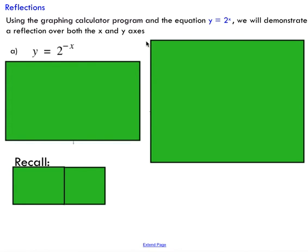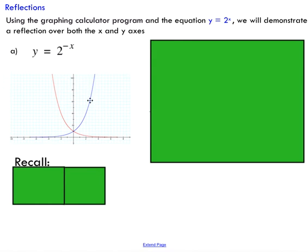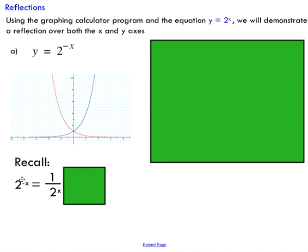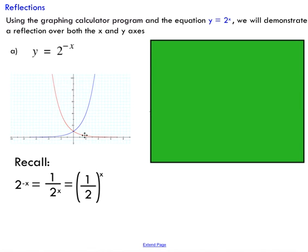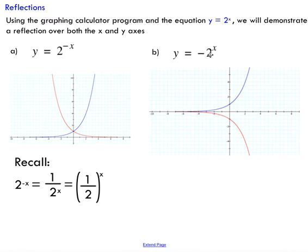For reflections — if we put a negative in front of the x, inside the function, that's what we call a horizontal reflection, or a reflection over the y-axis. You can see the base graph is totally reflected over the y-axis, turning into what resembles a decay function. Note that 2 to the negative x can be rewritten as 1 over 2 to the x using exponent laws — a negative exponent means you put 1 over the base and make the exponent positive. If we put the negative in front of the entire function instead, we reflect over the x-axis.